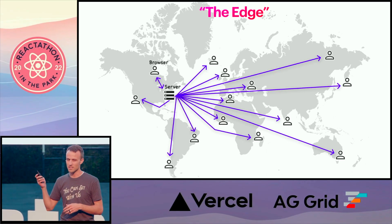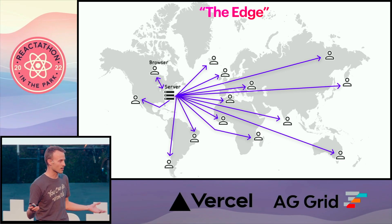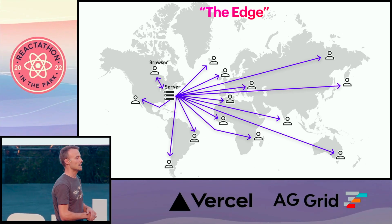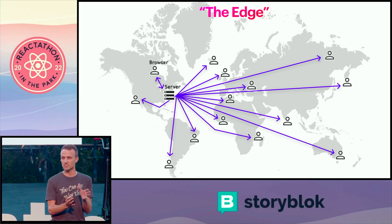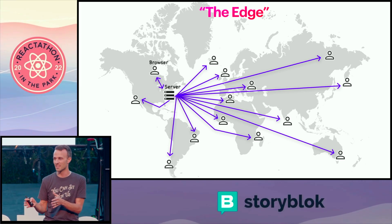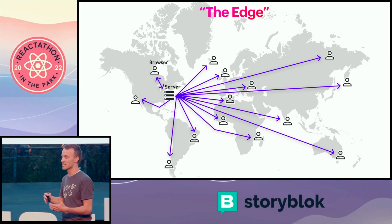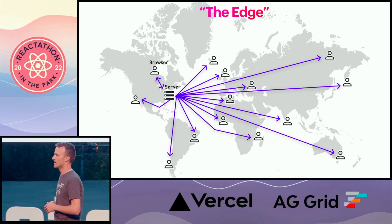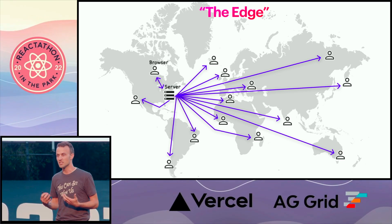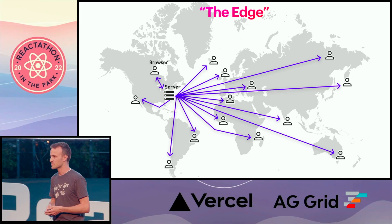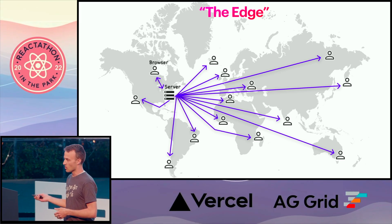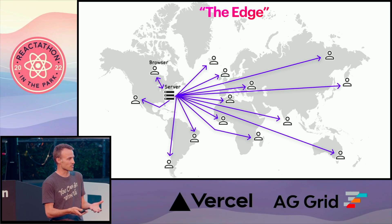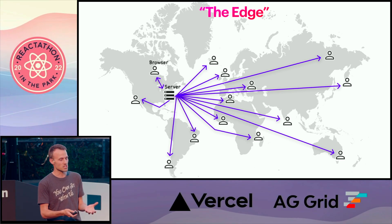Except that users, wherever they are in the world, need to go talk to that same server. The series of tubes that they go through can make that take an exceedingly long amount of time, and it reduces the user experience because the performance is so bad. But the problem is we need to talk to the server — the server has the information that we need.